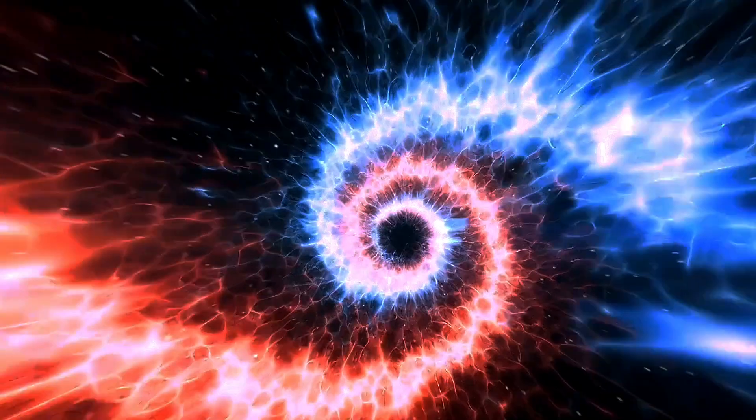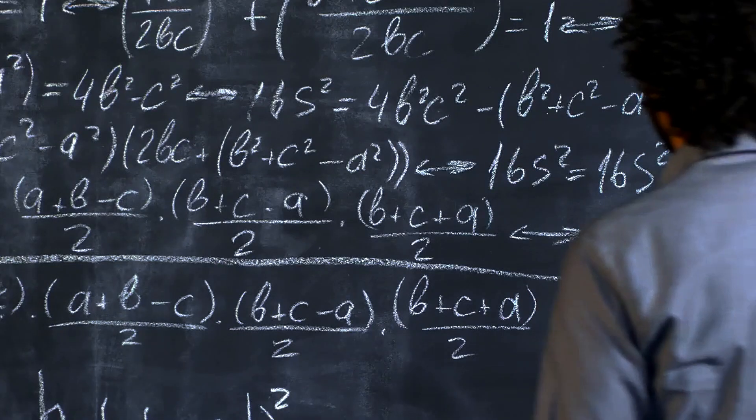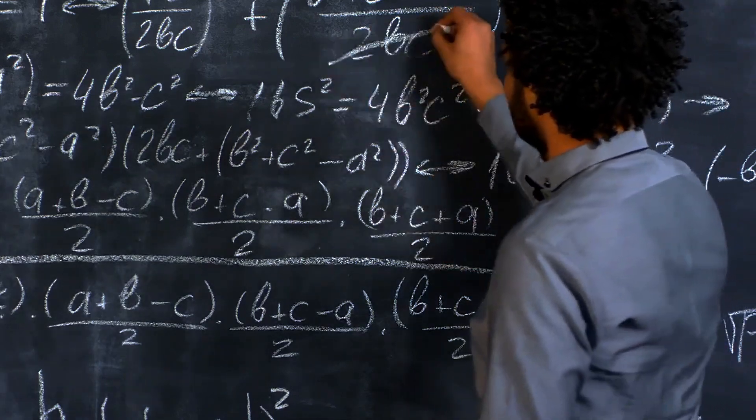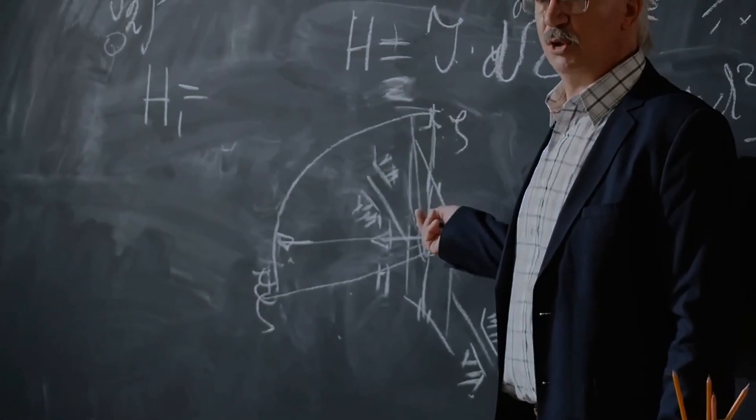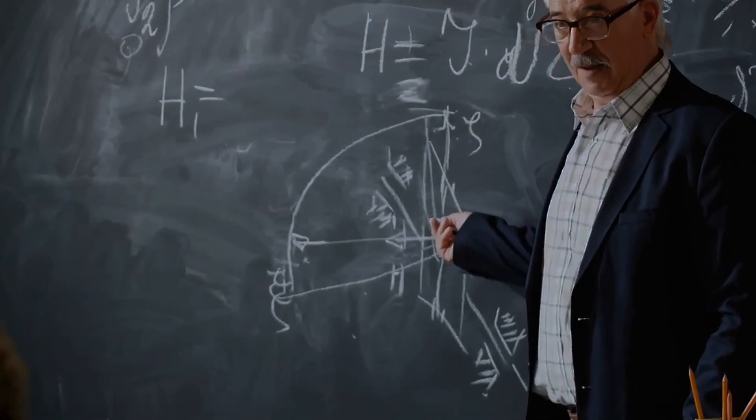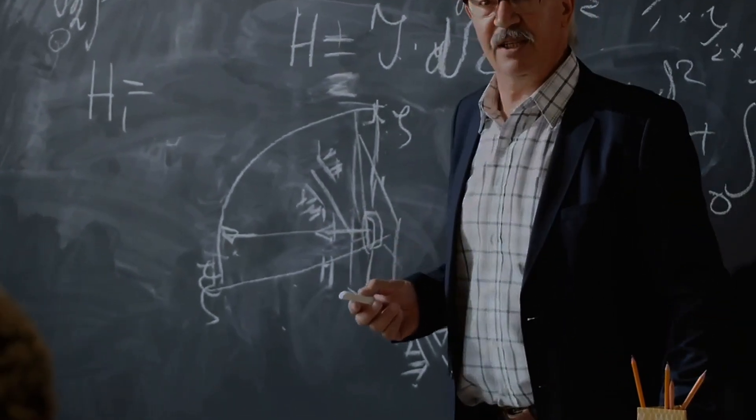It took Einstein several years, the exploration of numerous mathematical dead ends, the need of enlisting mathematicians whose skills far surpassed his own, and going back and correcting a number of his own mistakes before finally, in 1915, he arrived at his general theory of relativity, commonly just known as general relativity, in its final form.